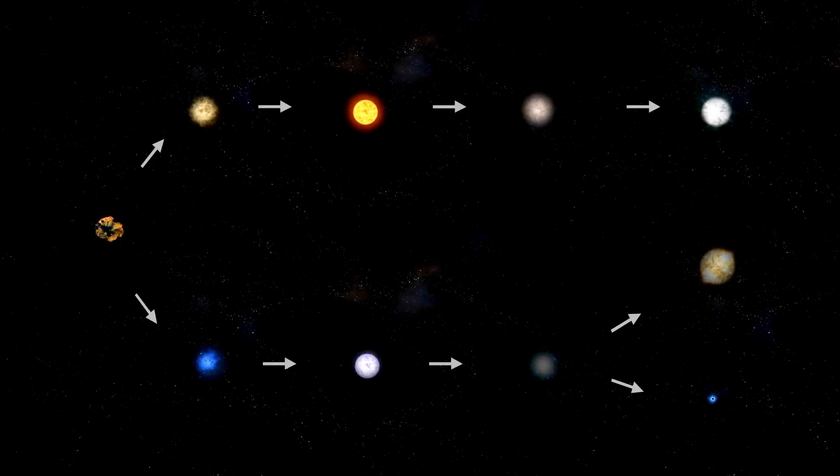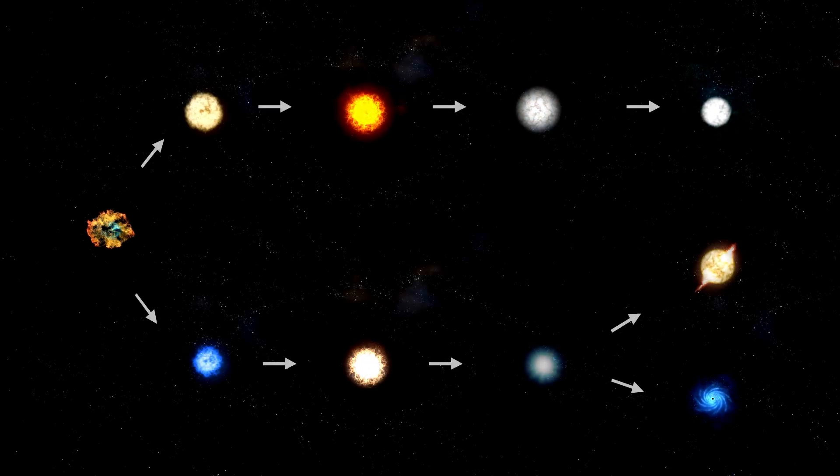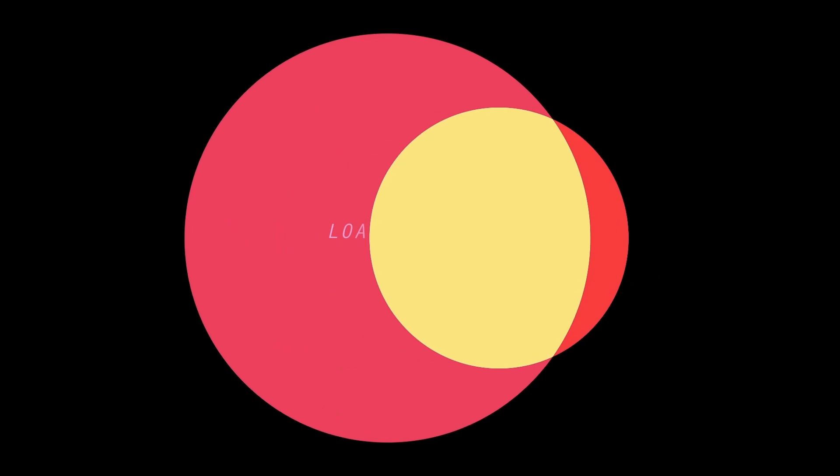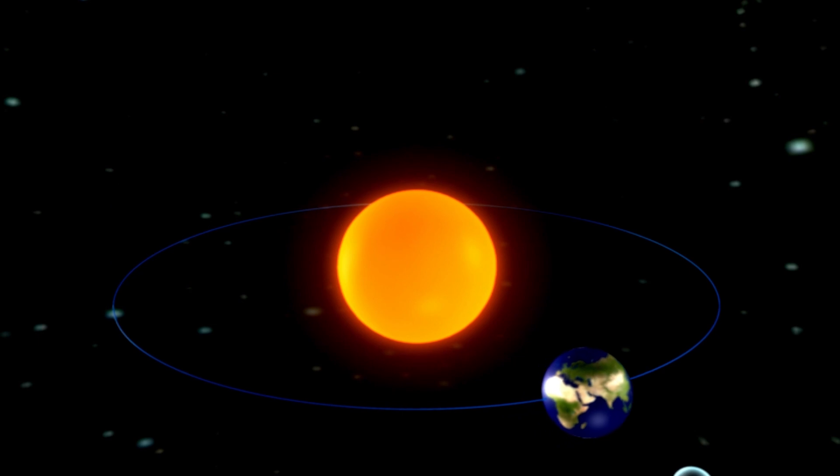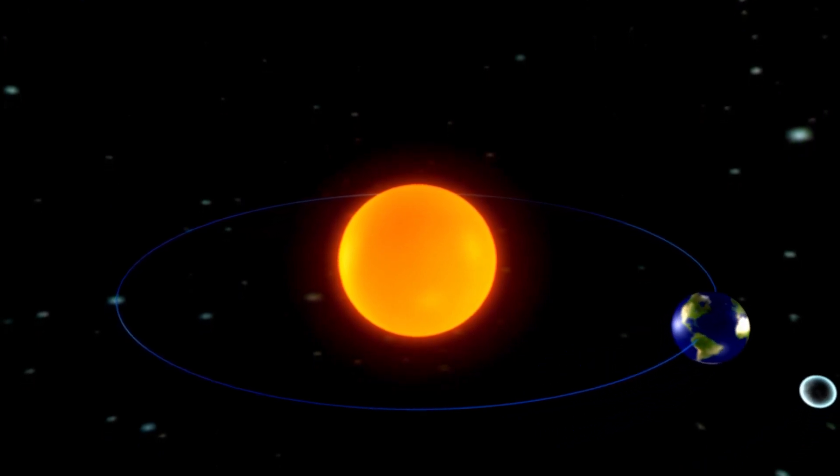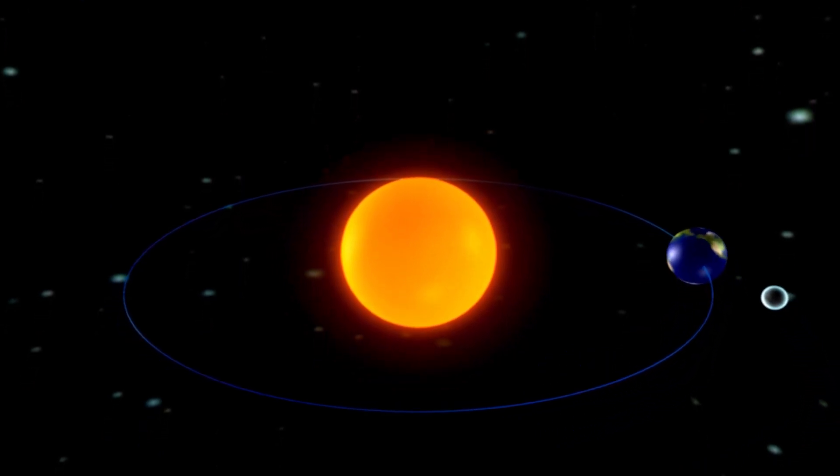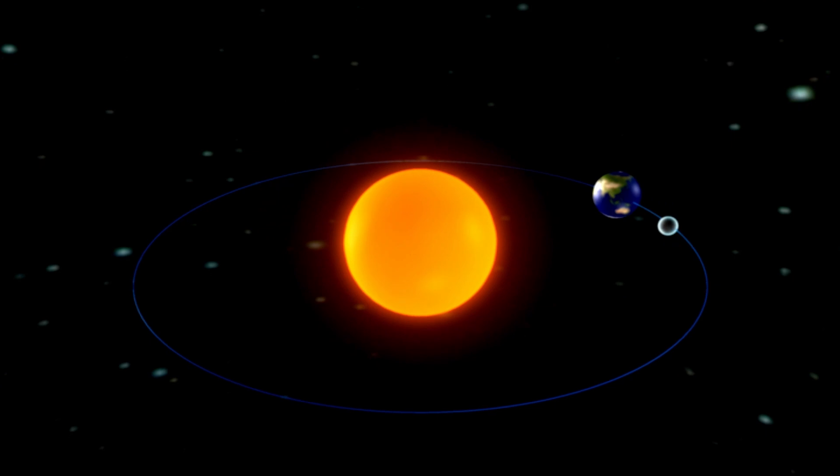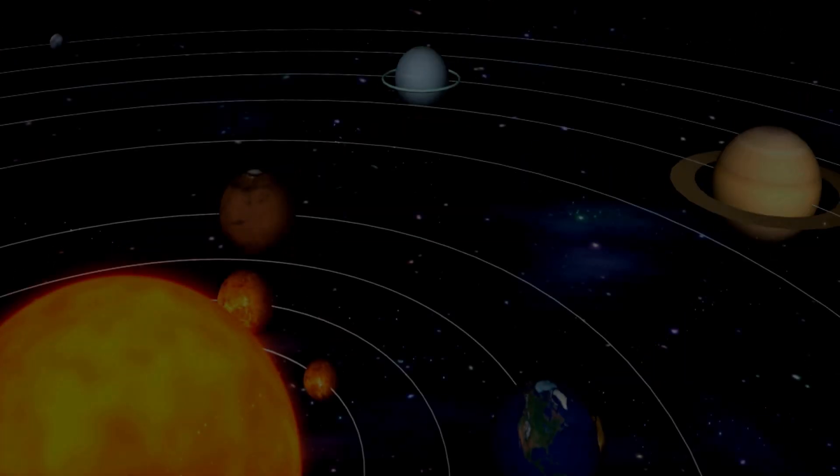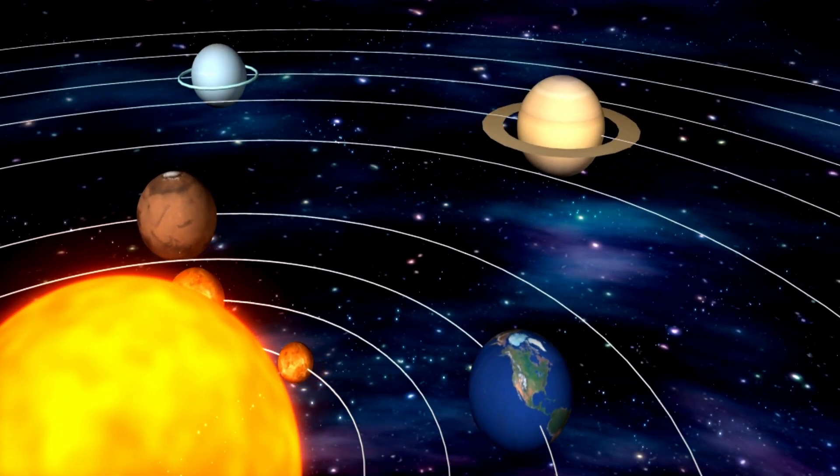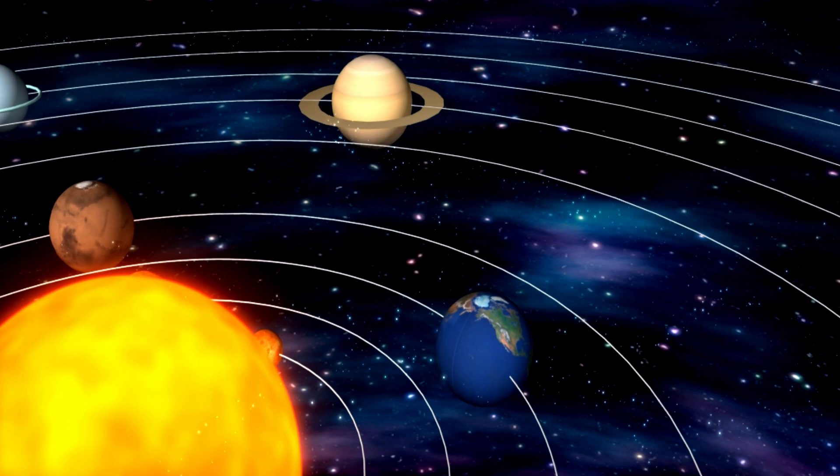Betelgeuse would be more luminous than Sirius if we could perceive light at all wavelengths. It is estimated that Betelgeuse is around 764 times the Sun's radius in diameter. If this star were to take over as the Sun of our solar system, its influence would extend past Jupiter and the asteroids. This would result in the complete engulfment of Earth, Mars, Mercury, and Venus.